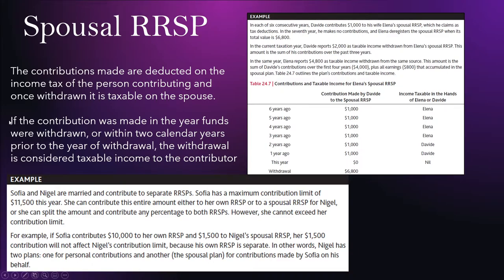There is an exception: if the contribution was made in the year the funds were withdrawn, or within two calendar years prior to the year of withdrawal, the withdrawal is considered taxable to the contributor. For example, if a husband contributes $1,000 to his wife's spousal RRSP for six years but not the seventh year, when she withdraws, amounts contributed within the past two calendar years are taxable to the husband, while older contributions are taxable in the wife's name.